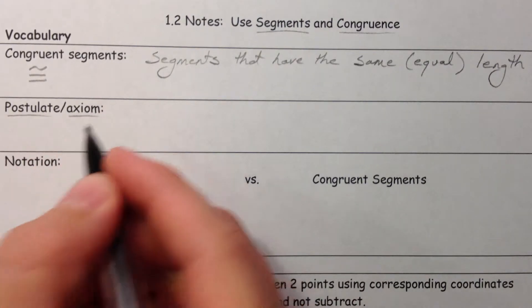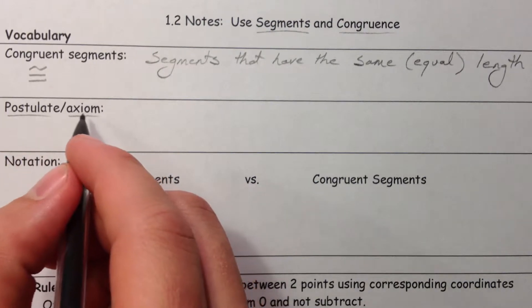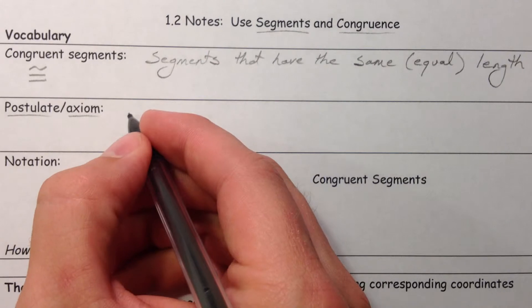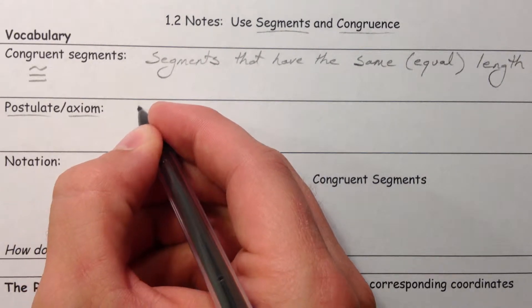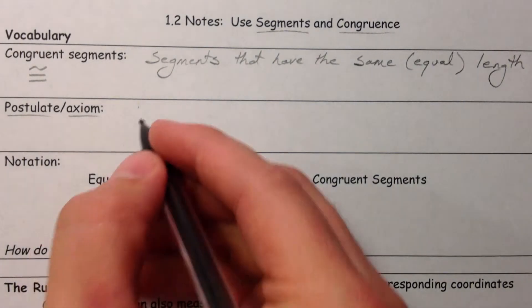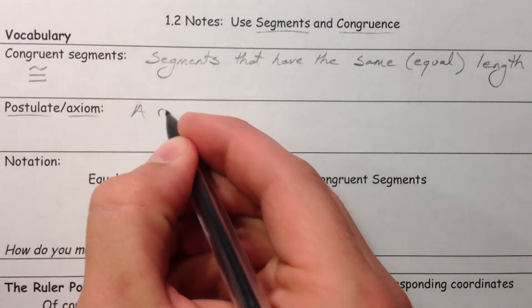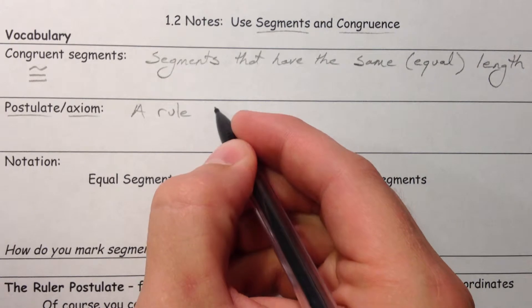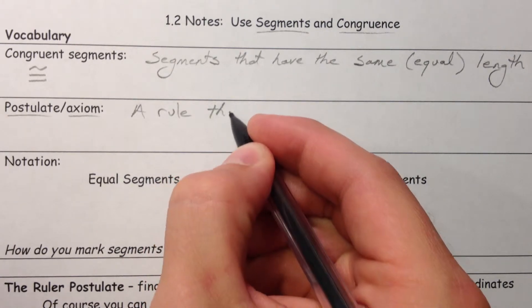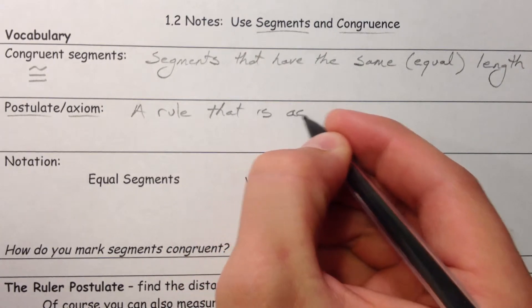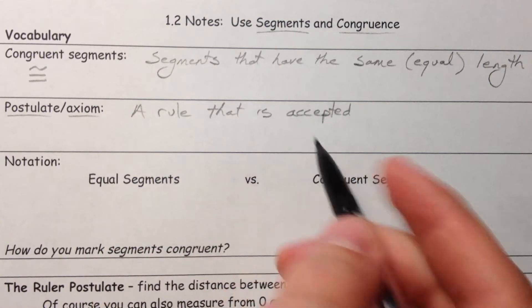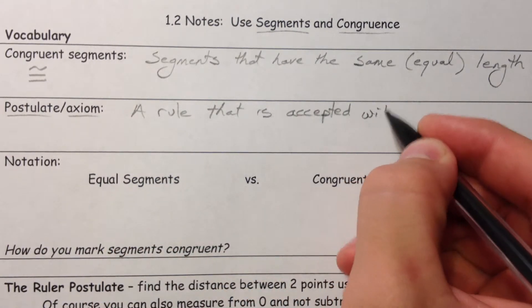Another fancy word we're going to introduce is postulates, or axioms. Both of these are essentially accepted as proof in geometry. It's just going to be a rule that you accept as true. The most important part here is a rule that is accepted without proof.